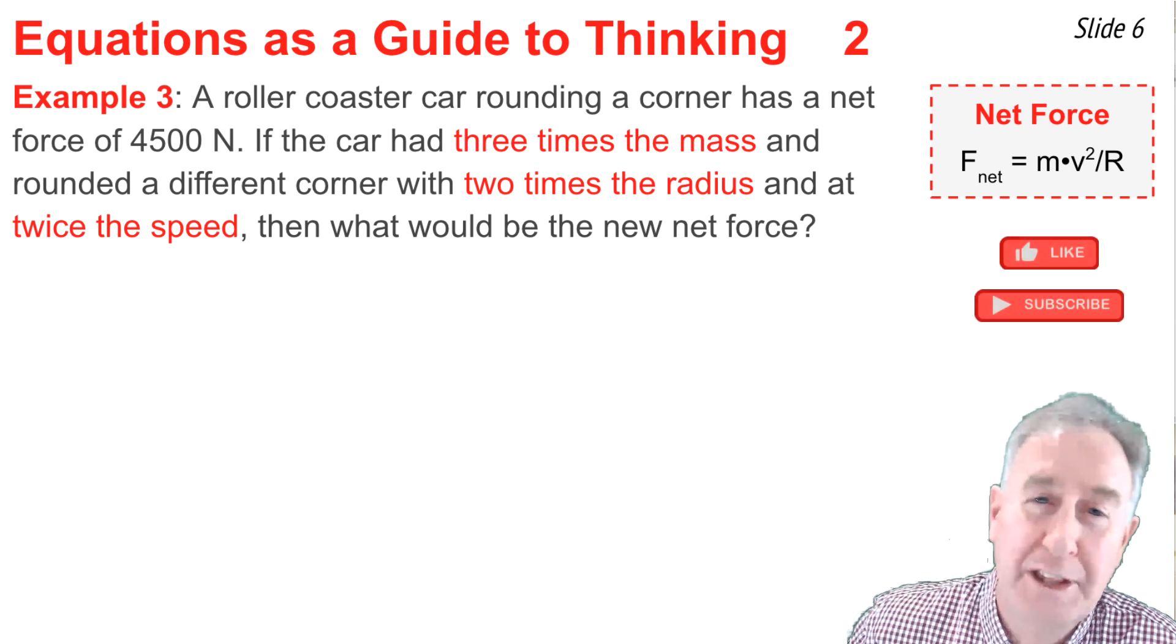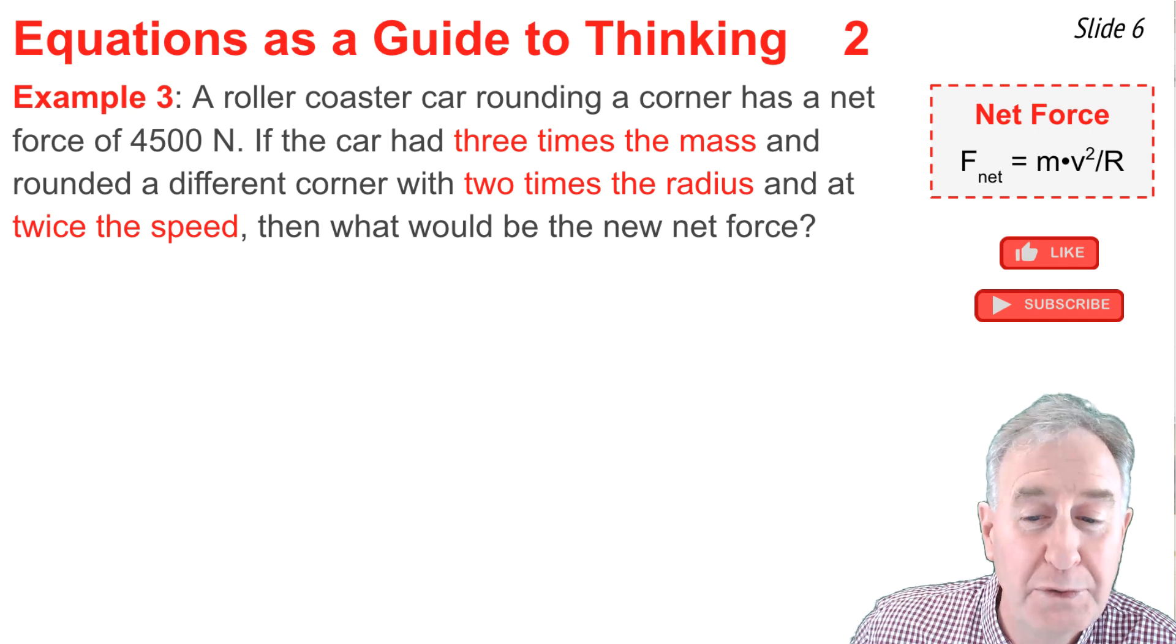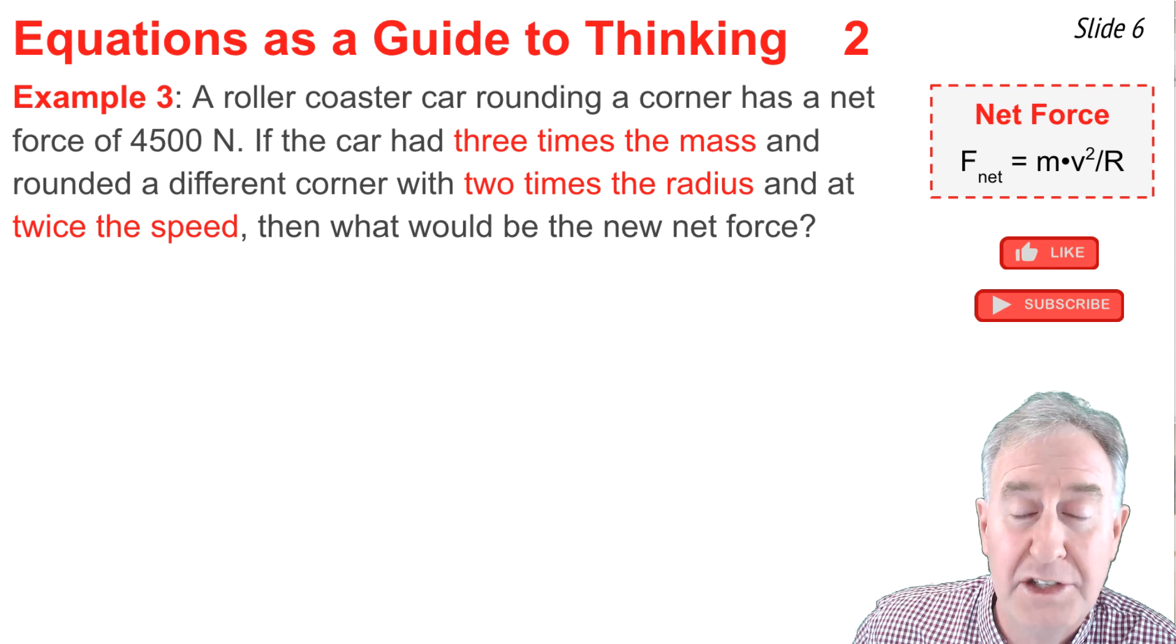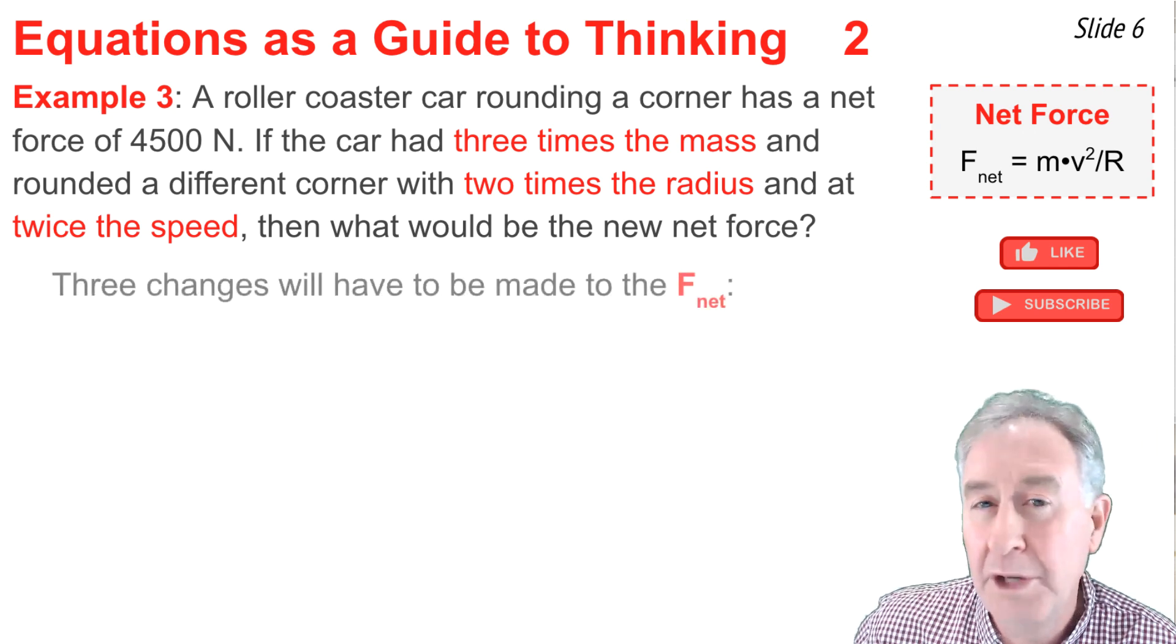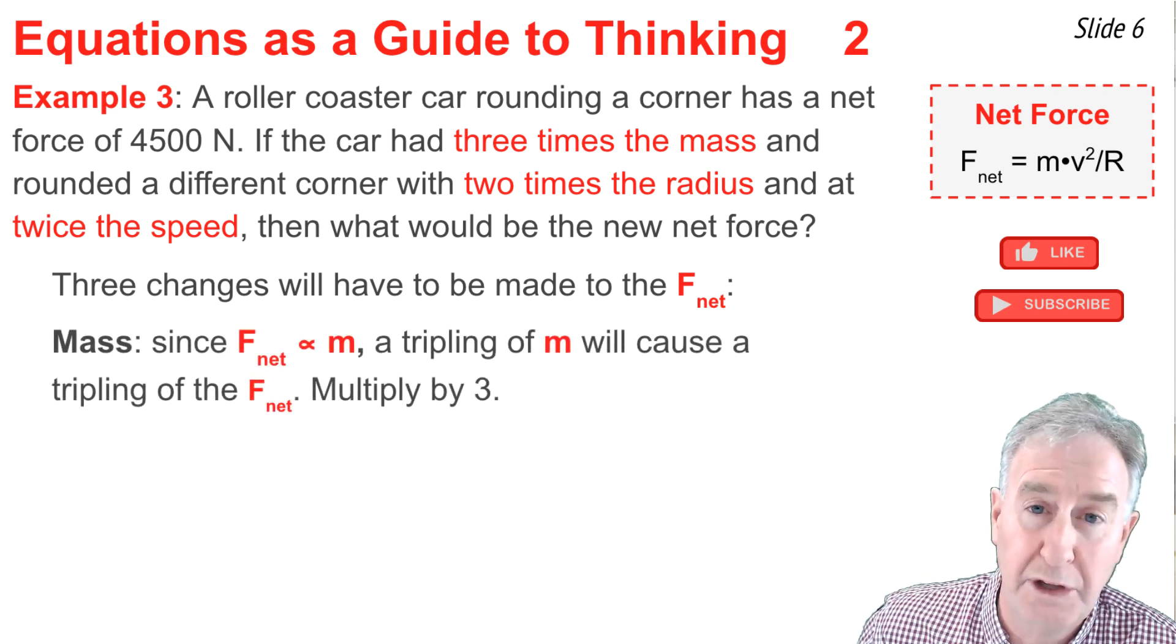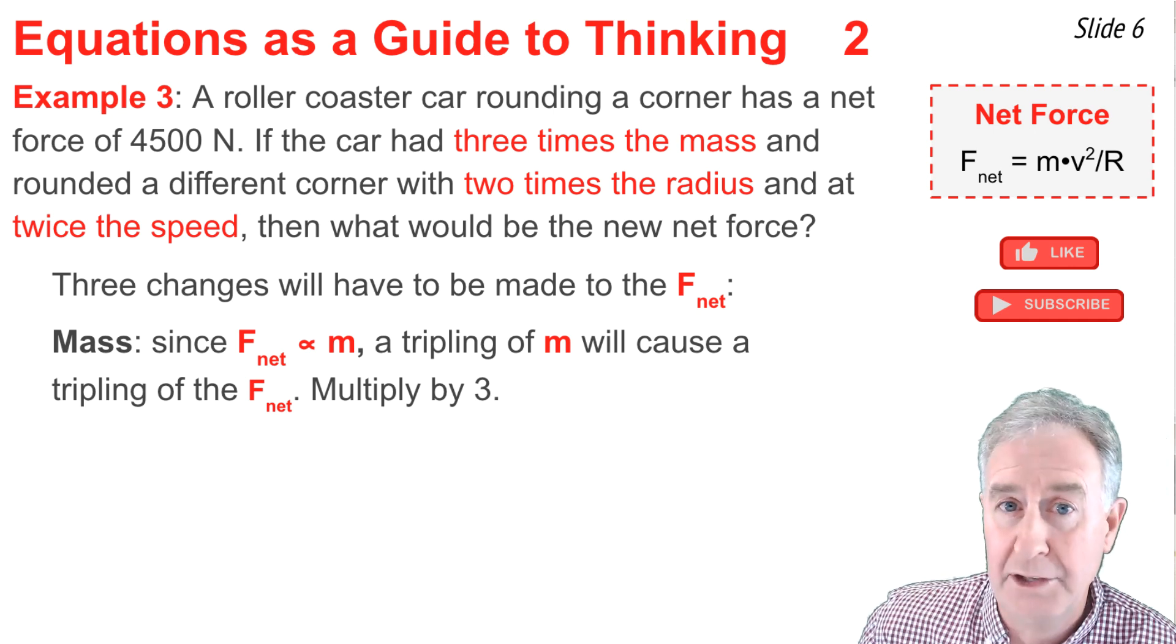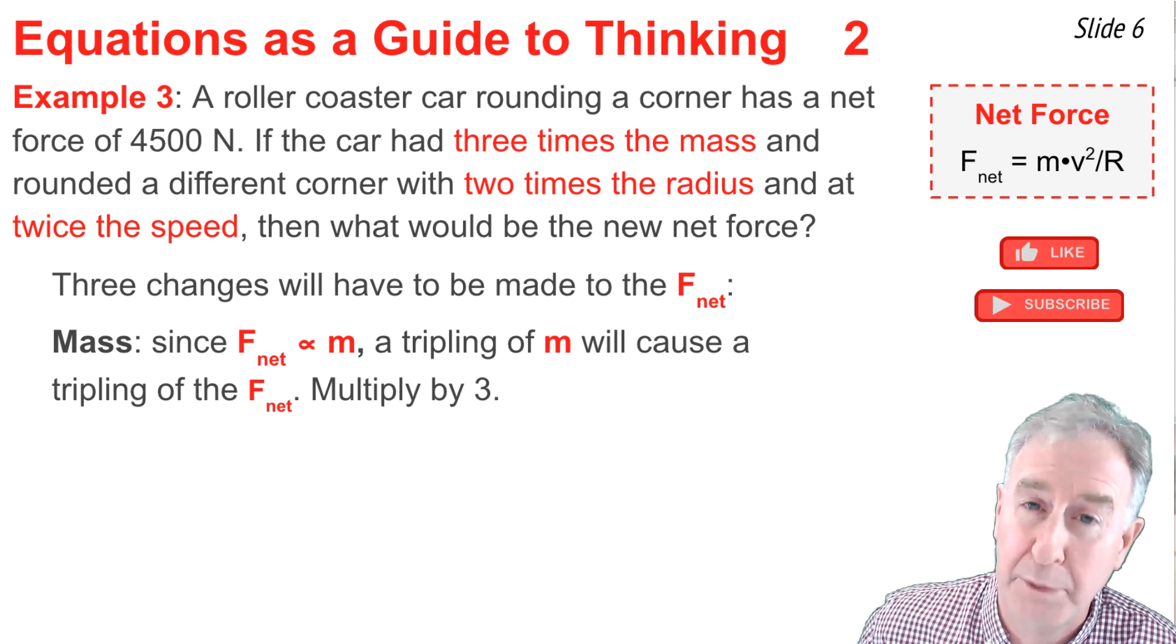Our third example goes like this. A roller coaster car is rounding a corner and has a net force of 4,500 newtons. If the car had 3 times the mass and rounded a different corner with twice the radius and did it with twice the speed, then what would be the new net force? Here there are three changes being made in the variables that f net depends upon. So I'll need to make three changes to f net. The first change is the result of the change in mass. The mass was tripled. And according to the formula, f net is directly proportional to mass. So if mass is tripled, f net must also be tripled. One of the changes is I'll need to multiply by 3.